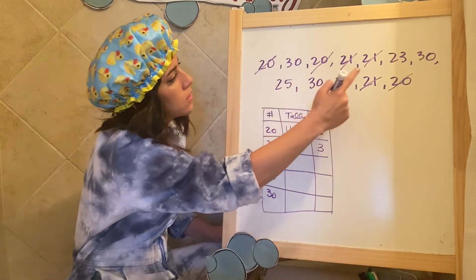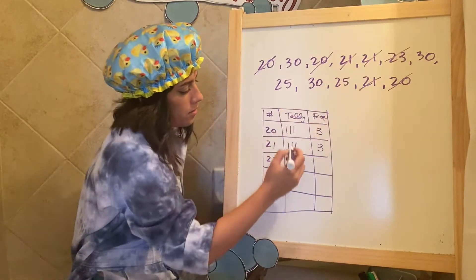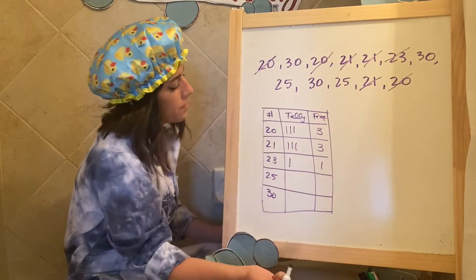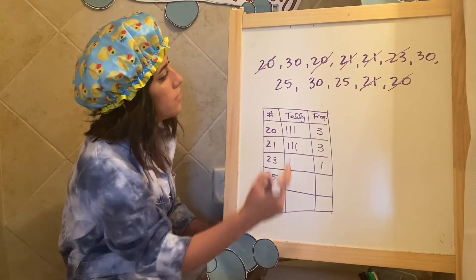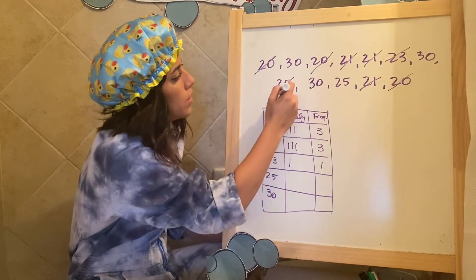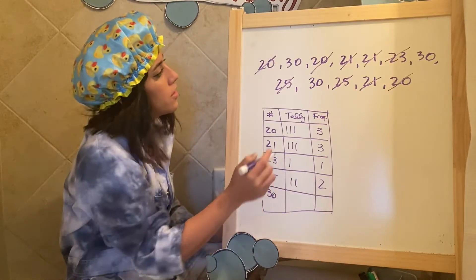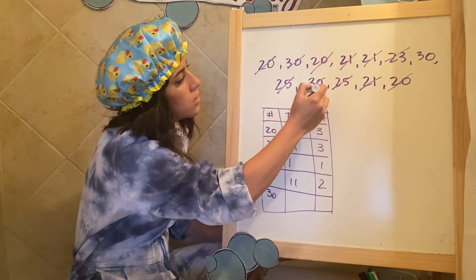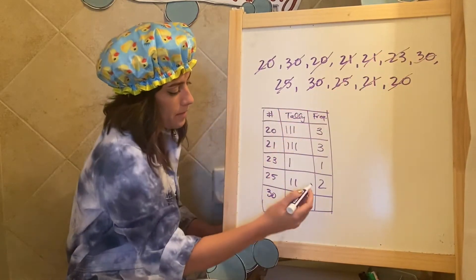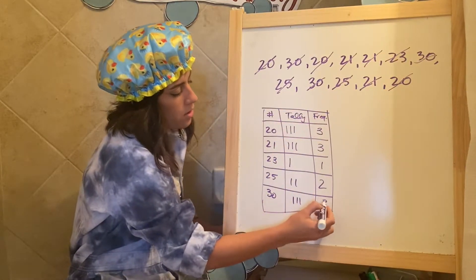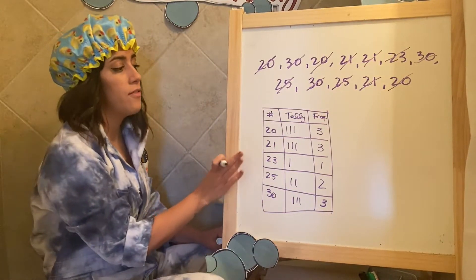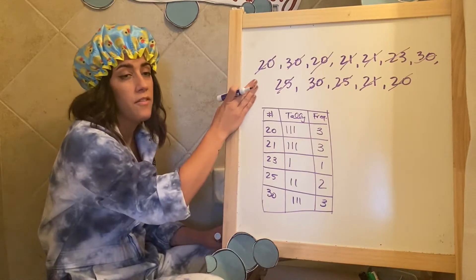How many 23s? One. I see one 23. How many 25s? One, two. Okay. How many 30s? One, two, three.